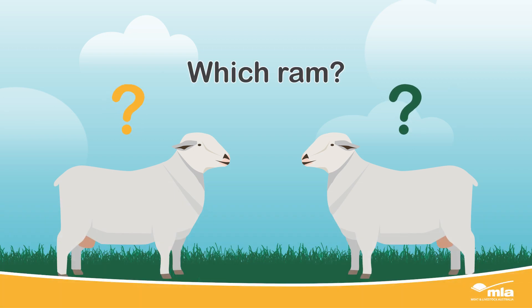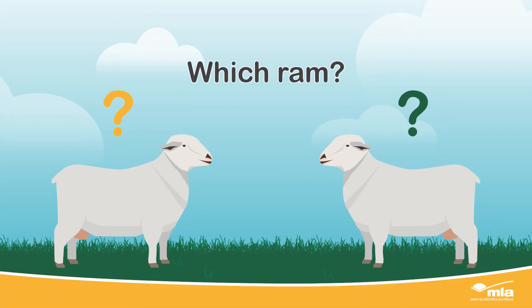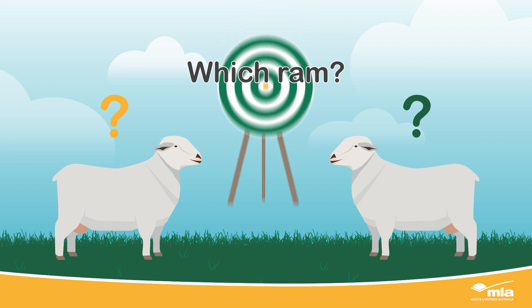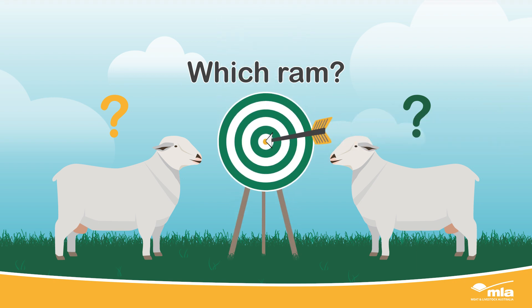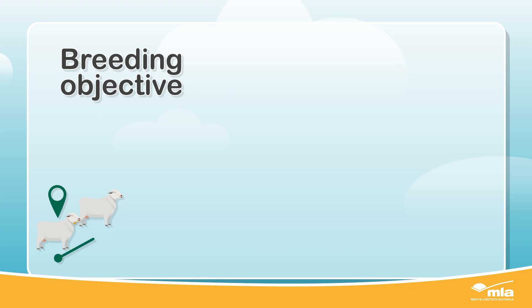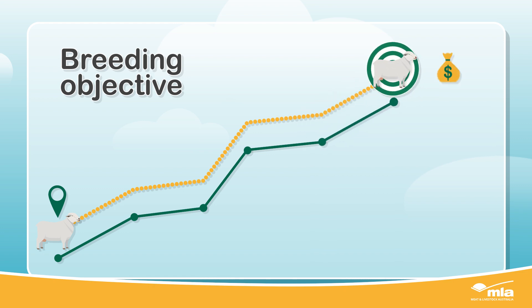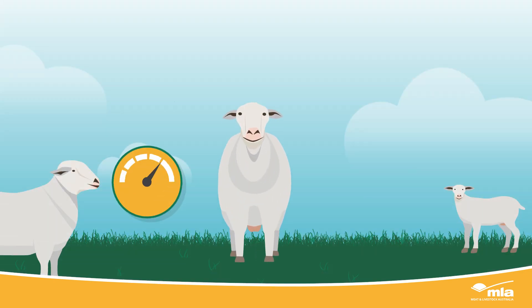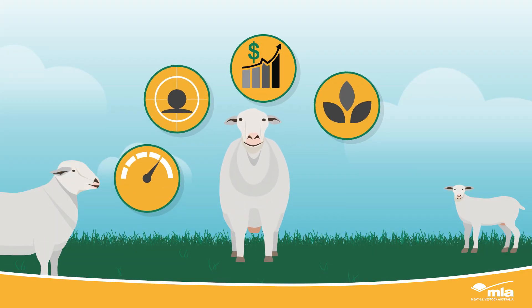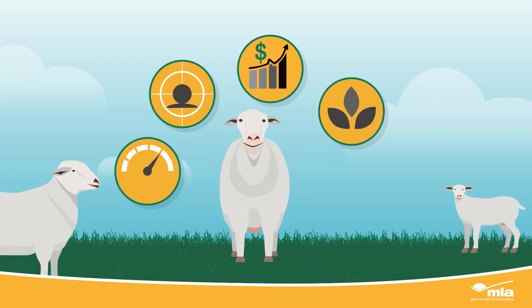Which ram will best match your breeding objective? A breeding objective describes your future production goals. It's only when you know where you want to go with your flock that you can choose the ram with the right genetics to help take you there. To decide on your breeding objective, start by identifying your flock's current performance.